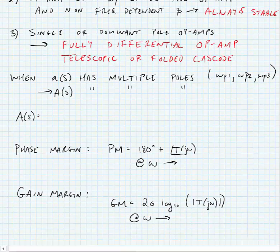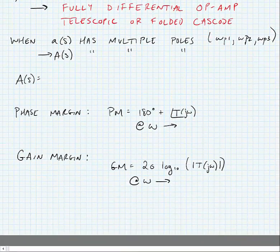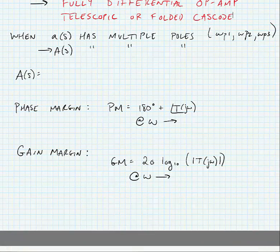Now let's think about what happens if we have more than one pole in our op amp, which most of the op amps we look at actually do. So let's say that a(s), our open loop gain, has multiple poles: omega p1, omega p2, and omega p3. That means that our closed loop response has the same poles.